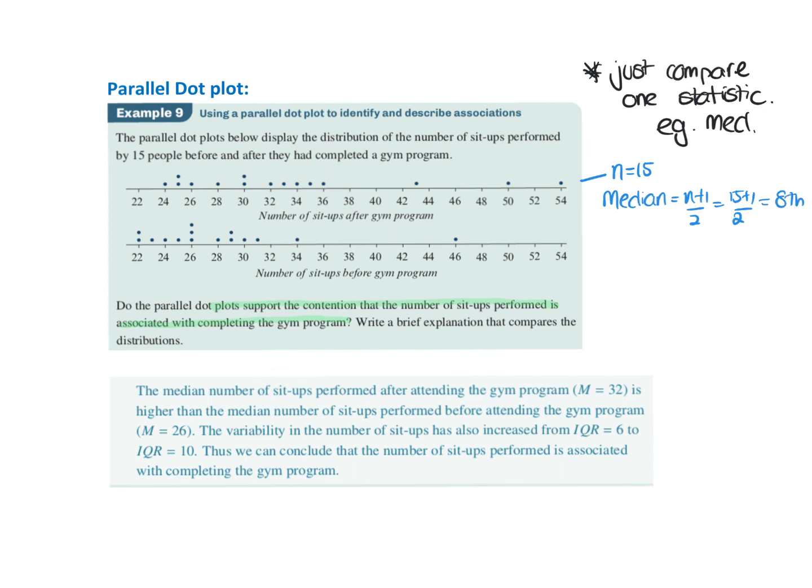So this one we could find at the 8th spot. If I count through 8 dots, I've got 1, 2, 3, 4, 5, 6, 7, 8. So 32 is the median for this after the program.